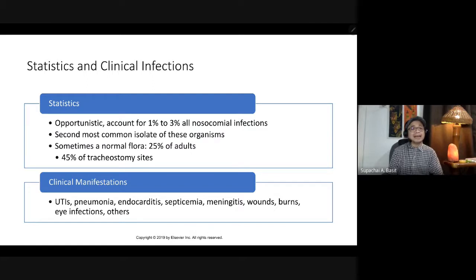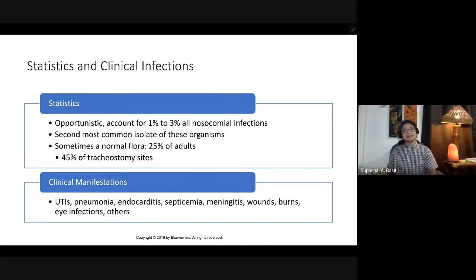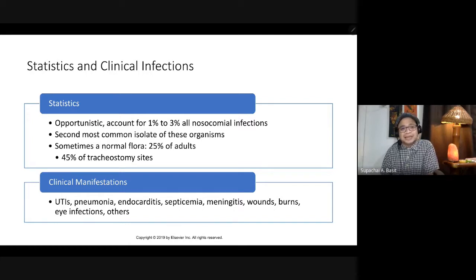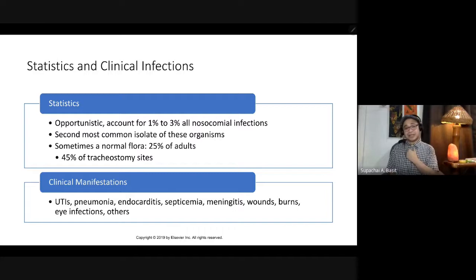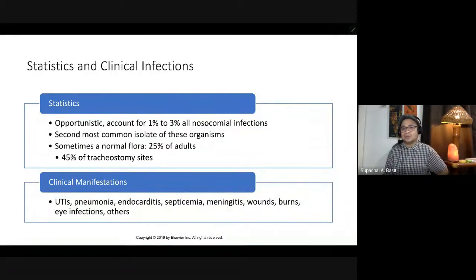Acinetobacter is considered opportunistic — taking advantage of hosts with weak immune systems. It accounts for about 1% to 3% of all nosocomial infections. Sometimes it is found as normal flora in about 25% of adults, but this percentage increases after tracheostomy. Clinical manifestations include UTI, pneumonia, endocarditis, septicemia, meningitis, wound burns, eye infections, and others.